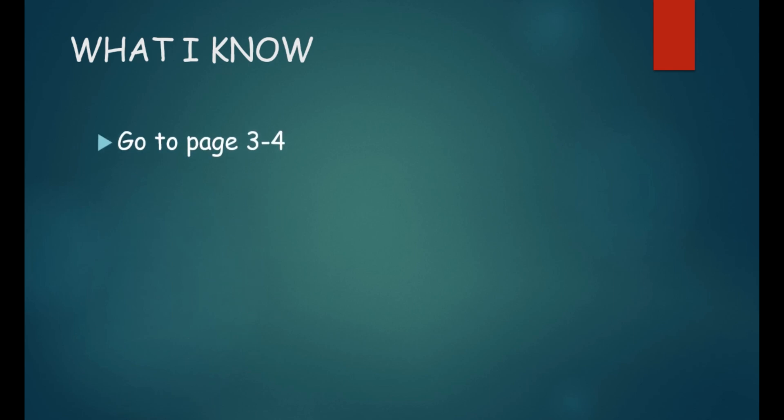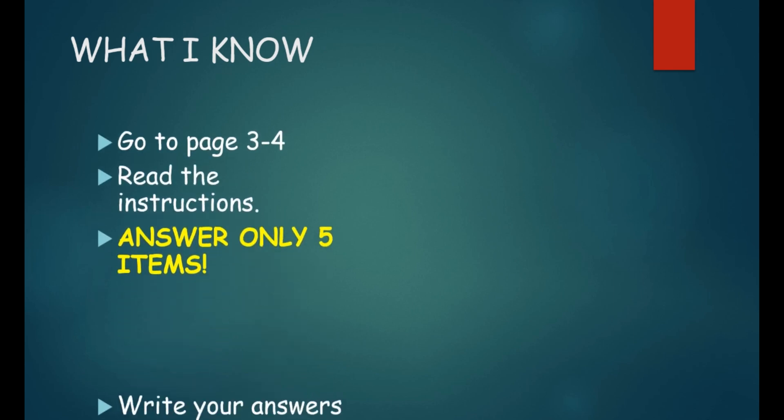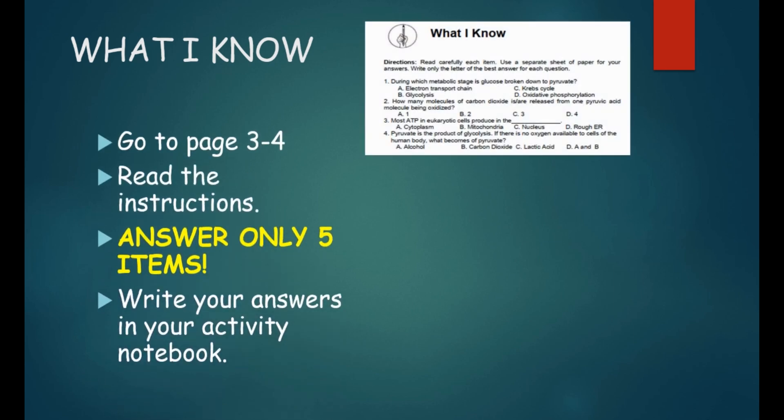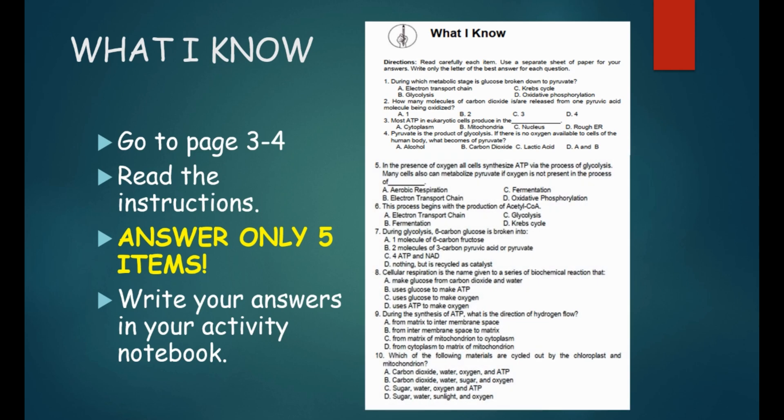Before we go on, let's find out what you know about the topic. Go to page 3 to 4 of your modules. Read carefully each item. Write only the letter of the best answer for each question. Answer only 5 items. Then write your answers in your activity notebook.